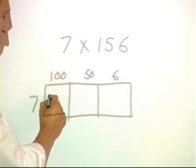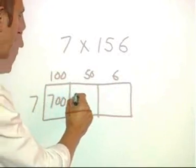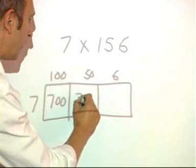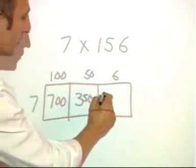So, 7 times 100 is going to give me 700. 7 times 50 is going to give me 350. And then 7 times 6 is going to give me 42.